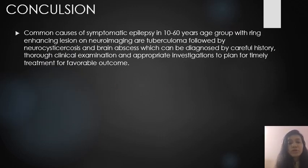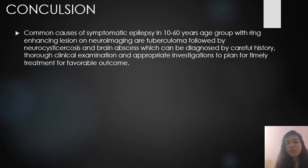Conclusion: the common cause of symptomatic epilepsy in the 10–60 years age group with ring enhancing lesions on neuroimaging is tuberculoma, followed by neurocysticercosis and brain abscesses, which can be diagnosed by careful history, thorough clinical examination, and appropriate investigation to plan for timely management and favorable outcomes.